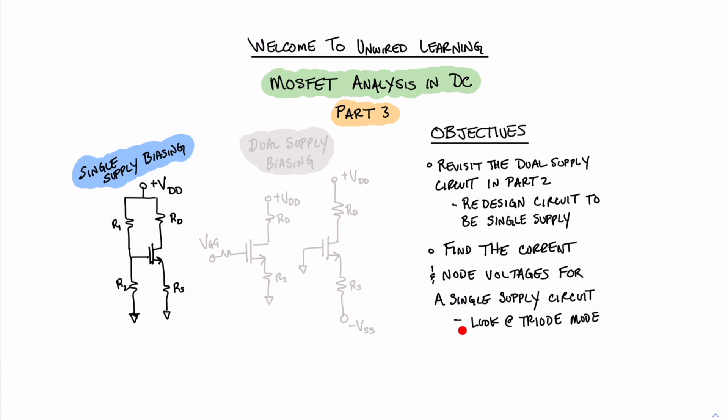This time, however, it's going to turn out that that circuit is in triode mode. Even though we know now that it's going to be in triode mode, we should go through the process so we can learn how we can determine that it wasn't in saturation.